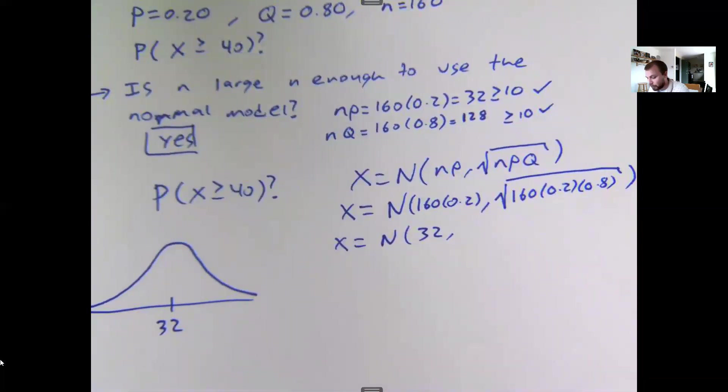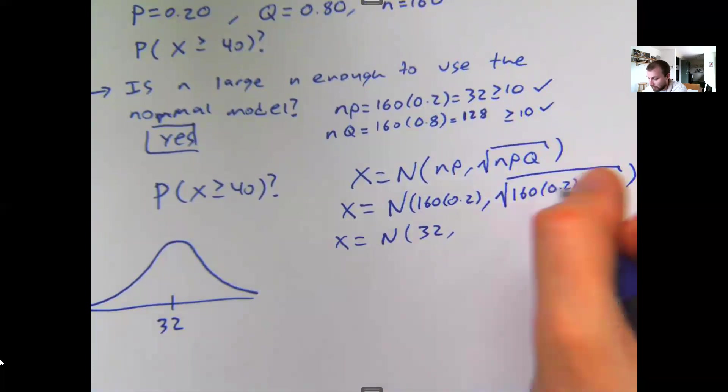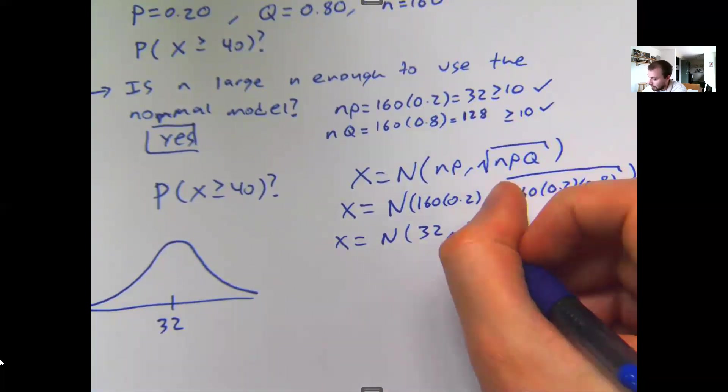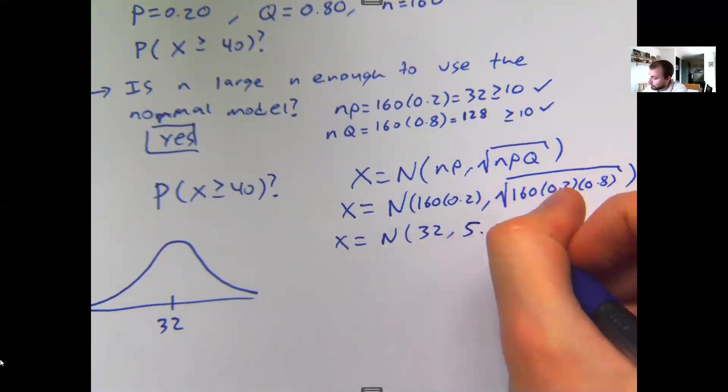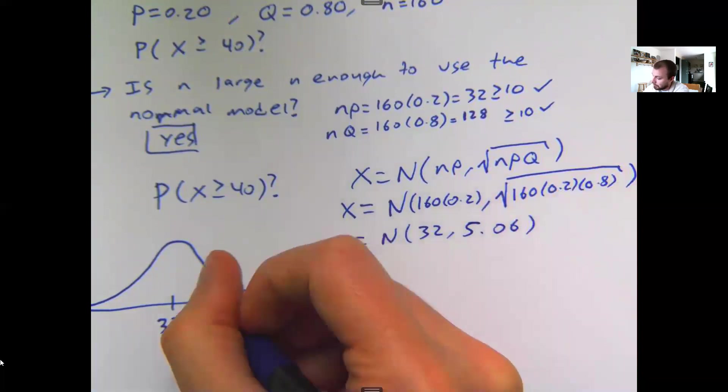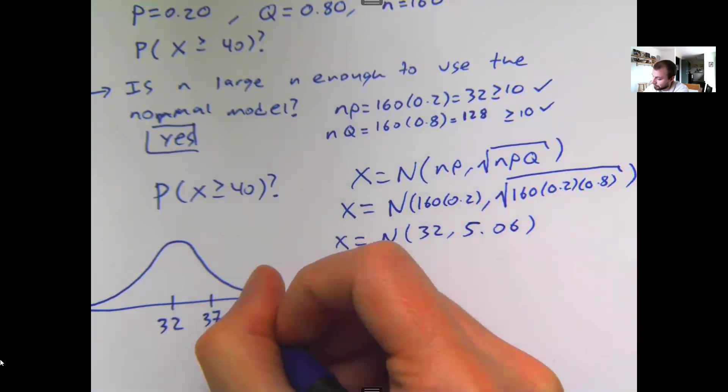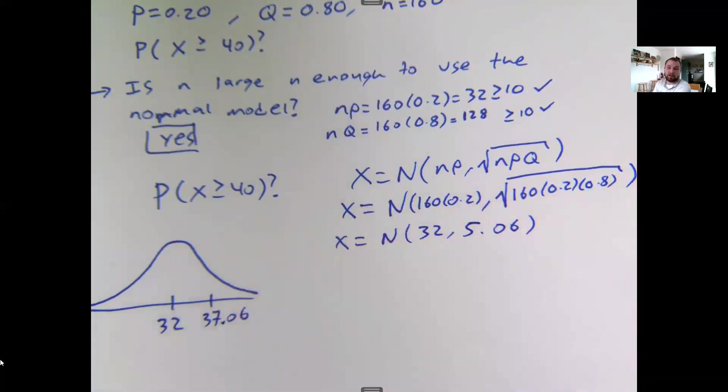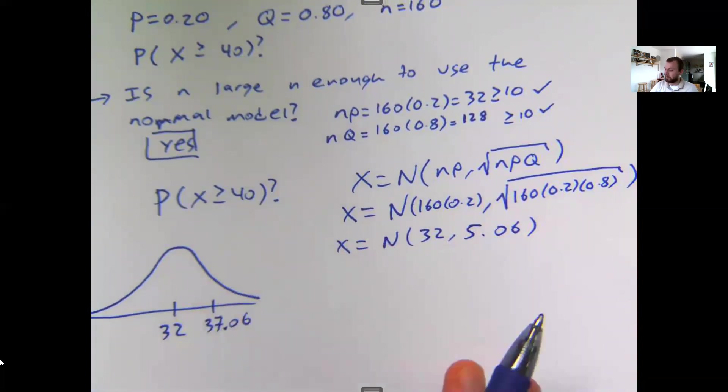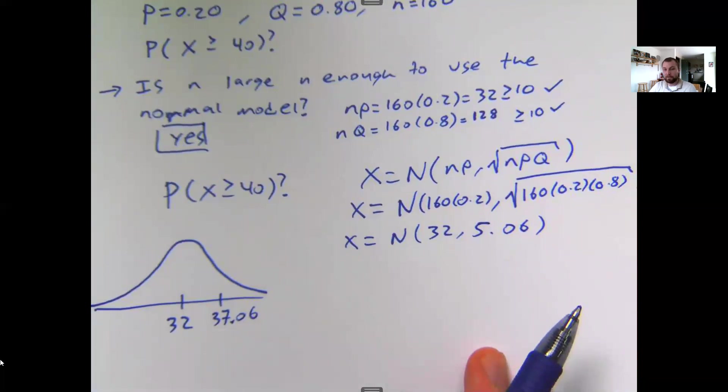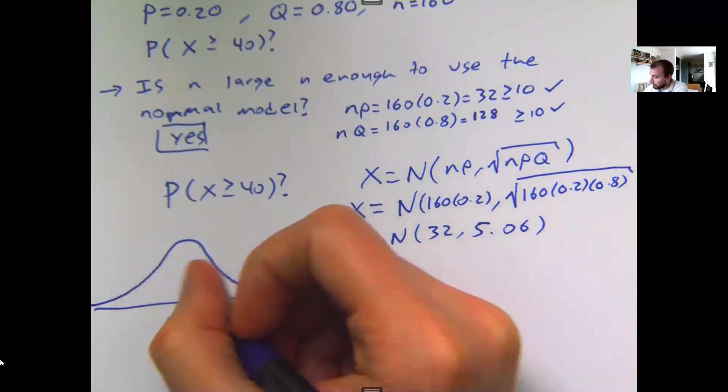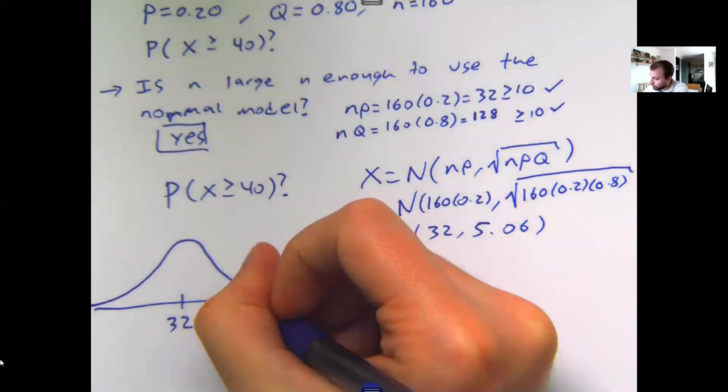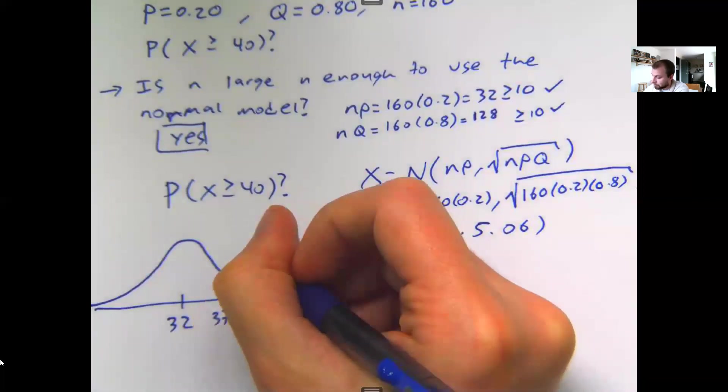Now let's see how much this is going to deviate. When I type this into my calculator, I get 5.06 or so. So this would be about 37.06-ish, and on the other side I would subtract 5.06. My value of interest is 40, so that looks like it's more than one standard deviation but probably less than two standard deviations away. And I want 40 or more.